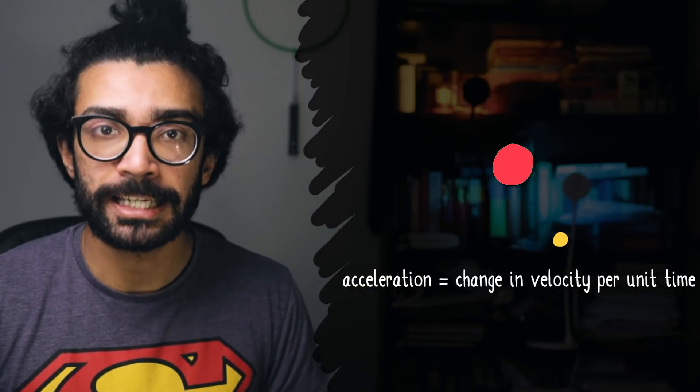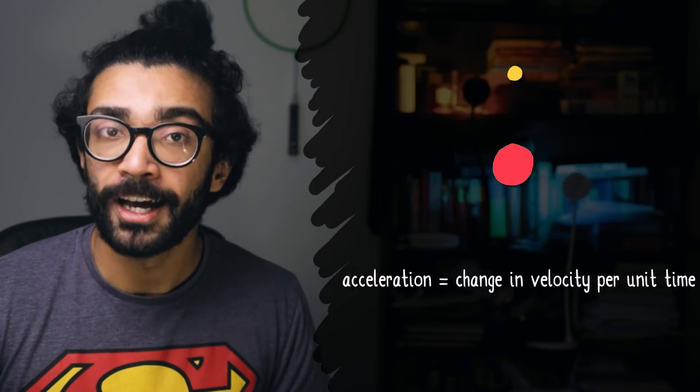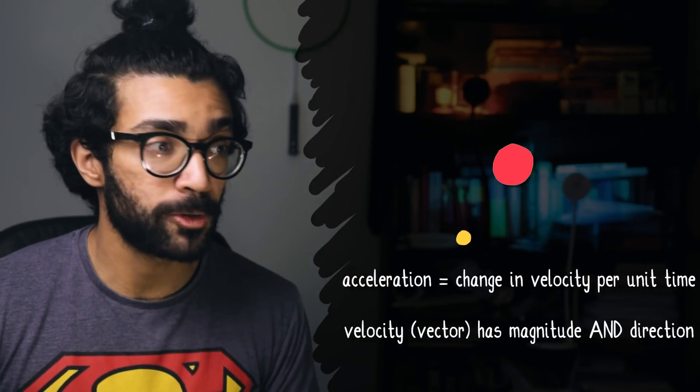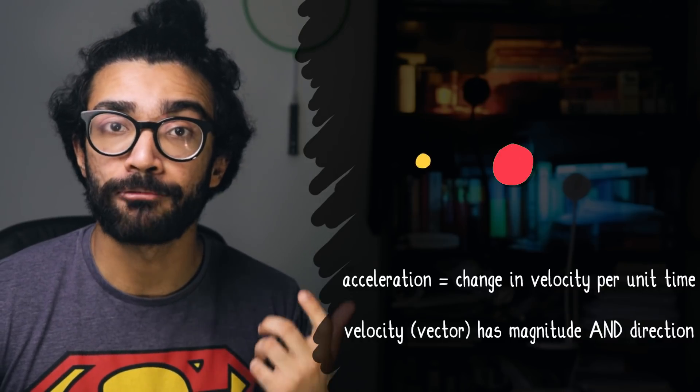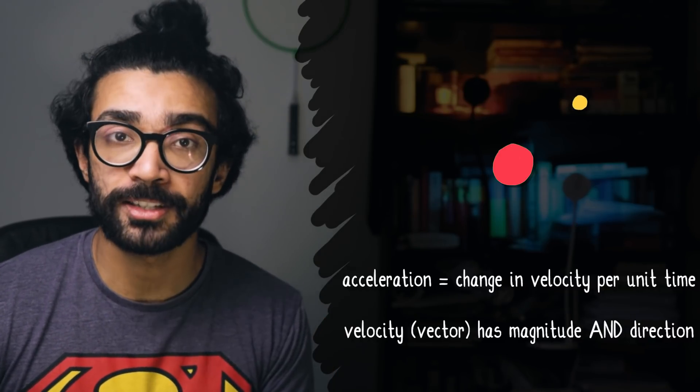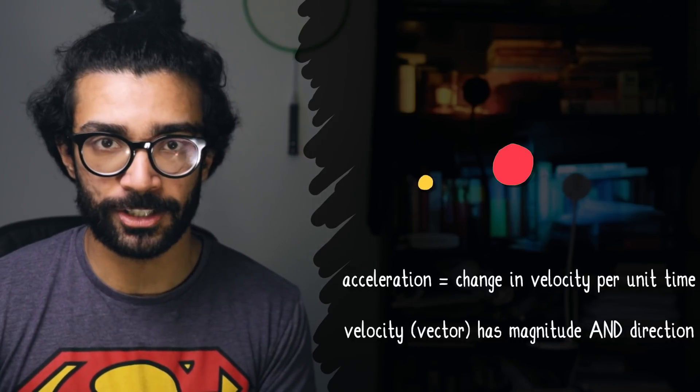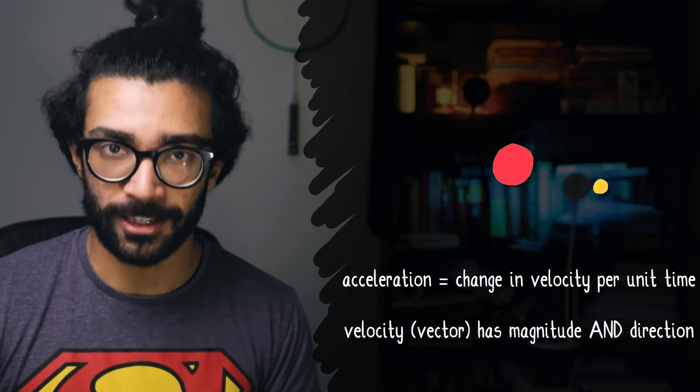Because remember, acceleration is changing velocity. And velocity is a vector quantity. Not only does it have magnitude, that's the speed at which an object is moving, but it has direction as well. So these spinning electrons are constantly changing direction, so they're constantly changing velocity, and therefore they're accelerating.